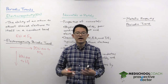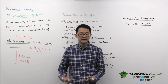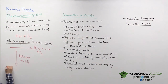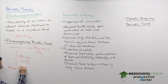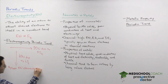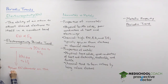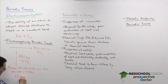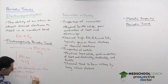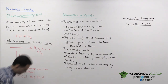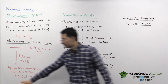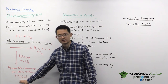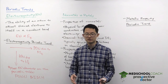One important thing to memorize for the MCAT is the mnemonic for the most electronegative elements on the periodic table: FONCLBRISCH. Starting from the left, fluorine is the most electronegative element, then oxygen is the second, nitrogen is the third, and so forth. F-O-N-C-L-B-R-I-S-C-H — good to keep in mind.